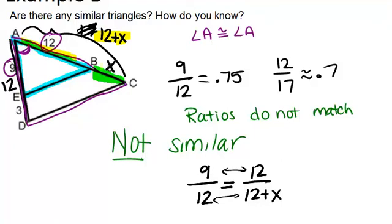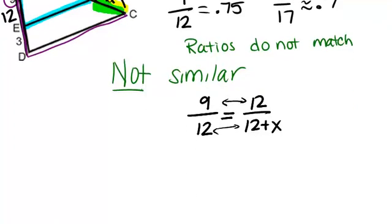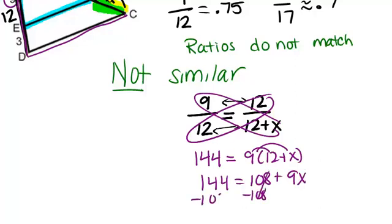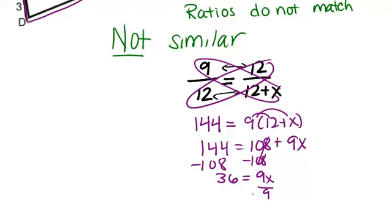So now we want to solve this by cross multiplying. And we get 144 equals 9 times (12 plus x), and then we'll distribute the 9, and we get 108 plus 9x, and then minus 108 from both sides. We get 36 equals 9x, which means that when you divide by 9, x has to be 4.